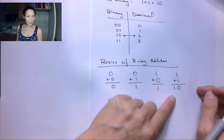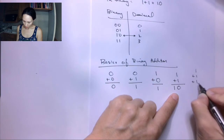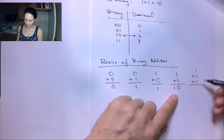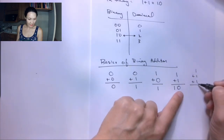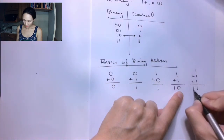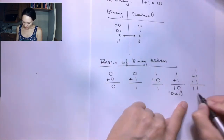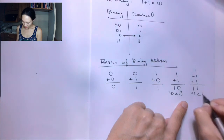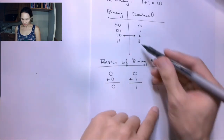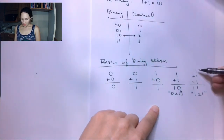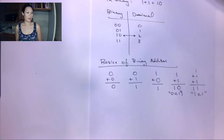Another helpful case is 1 plus 1 plus 1. The first two 1s give us 0, carry the 1. Adding a 1 to that 0 gives us 1, carry the 1. So 1 plus 1 plus 1 gives us 1, 1 — which is 3 in decimal. We can double-check with our decoder table: 1 plus 1 is 2, which is 1, 0 in binary; and 1 plus 1 plus 1 is 3, which is 1, 1 in binary.